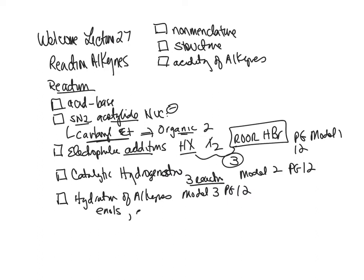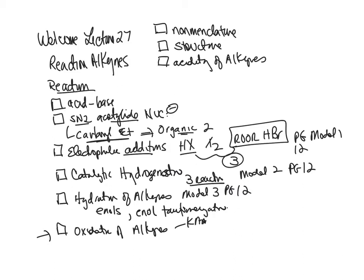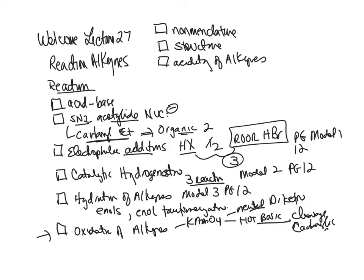Model three will talk about enols and enol tautomerization. What's not covered in POGIL, and what I'm going to talk about here before we get into the POGIL exercise, is oxidation of alkynes. We'll talk about potassium permanganate — under neutral conditions you get a diketone, and under hot basic conditions you get cleavage to carboxylic acids. We'll also talk about ozonolysis. That will wrap up our reactions for alkynes.